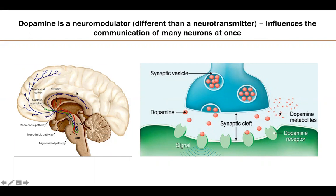The major dopamine-producing region of the brain is the midbrain, which contains the vast majority of dopamine-producing neurons. Within the midbrain, the substantia nigra is the most important dopamine cluster, important for movement and reflexes — this is the first function of dopamine. This is also the region whose neurons get depleted in patients who suffer from Parkinson's or depression.